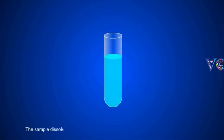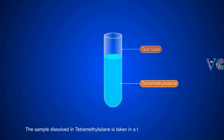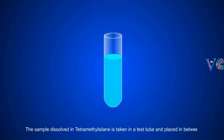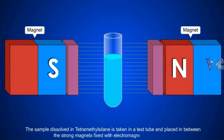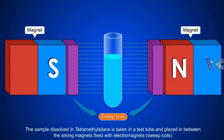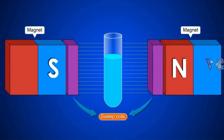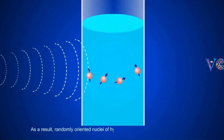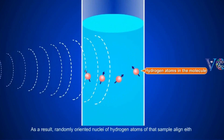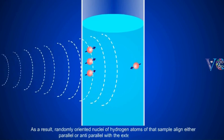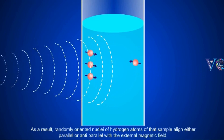The sample dissolved in tetramethylsilane is taken in a test tube and placed in between the strong magnets that are fixed with electromagnets — the sweep coils. As a result, the randomly oriented nuclei of hydrogen atoms in the sample align either parallel or anti-parallel with the external magnetic field.